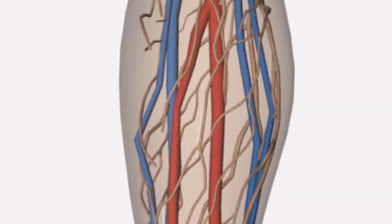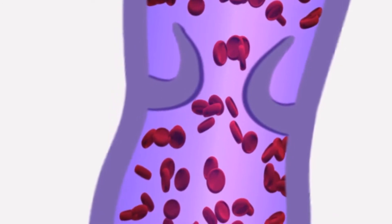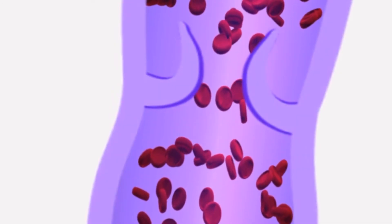Varicose veins are thought to form when the valves do not close properly. If the valves do not work properly, the blood is able to flow backwards and builds up in the vein, causing it to swell.